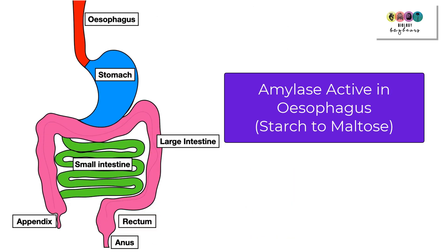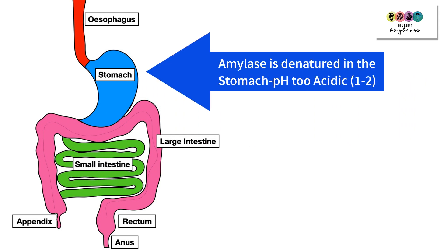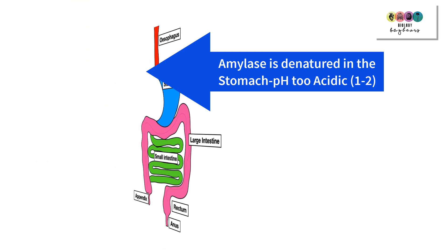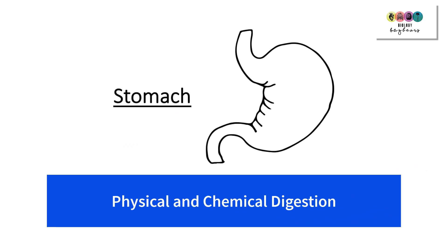As the bolus was being pushed by peristalsis down the esophagus, the enzyme amylase was still active, continuing to break down starch into maltose. However, once the bolus enters the stomach, the highly acidic conditions — a low pH of between 1 and 2 — cause amylase to become denatured and no longer active.